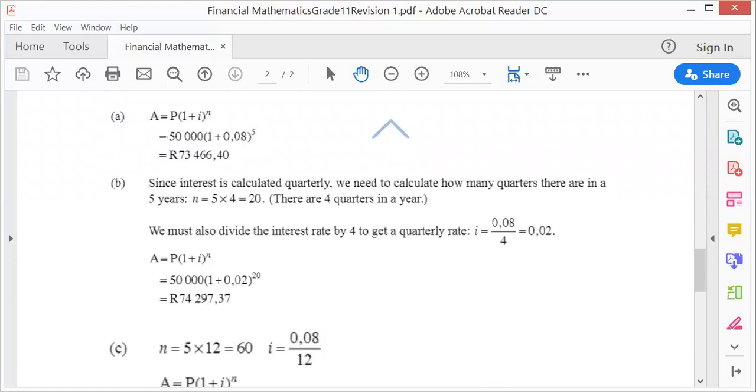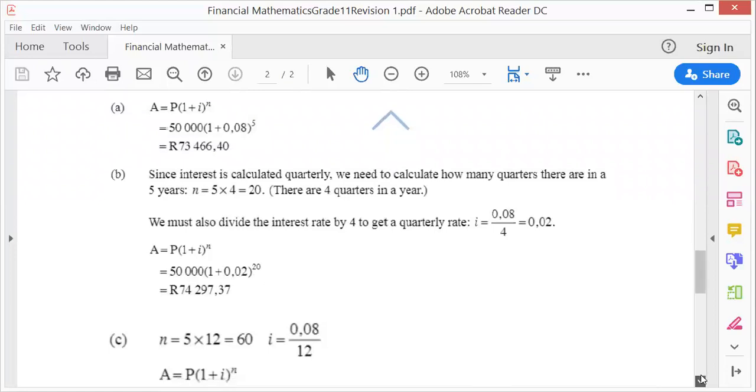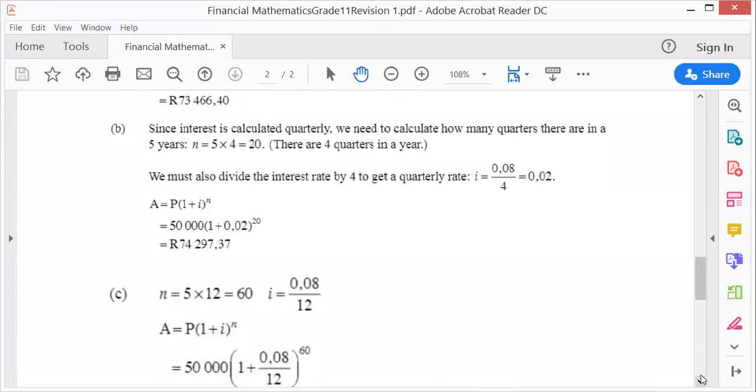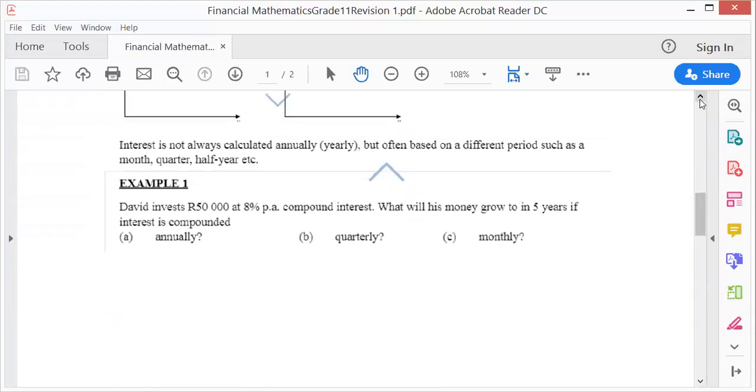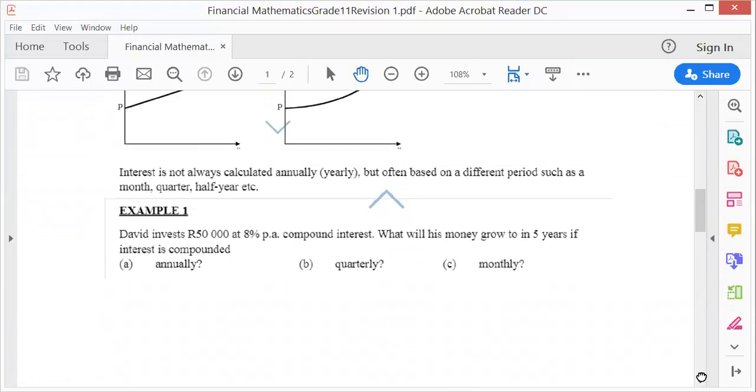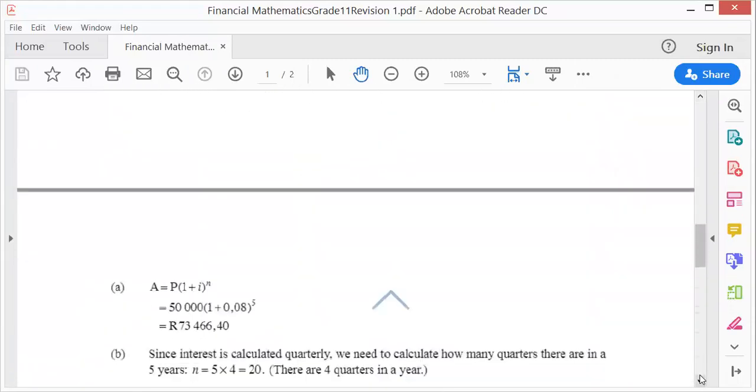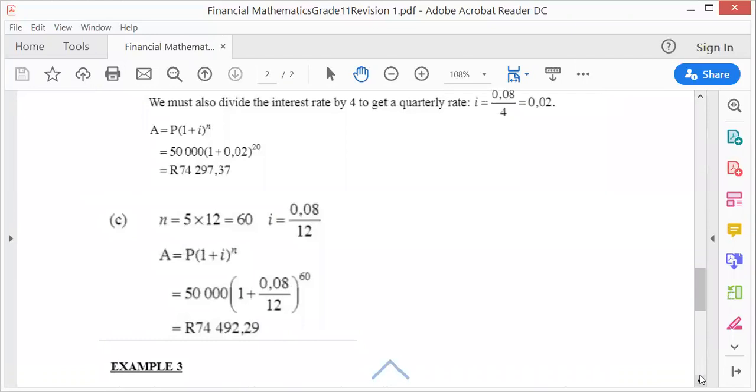It's monthly, so there are 12 months in a year. Your 0.08 must be shared by 12, so it's divided by 12. Your 5 years will increase 12 times because there are 12 months in a year, so it's 5 × 12 = 60. There's your answer.